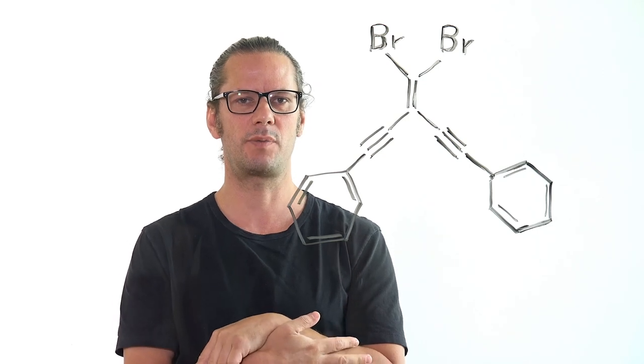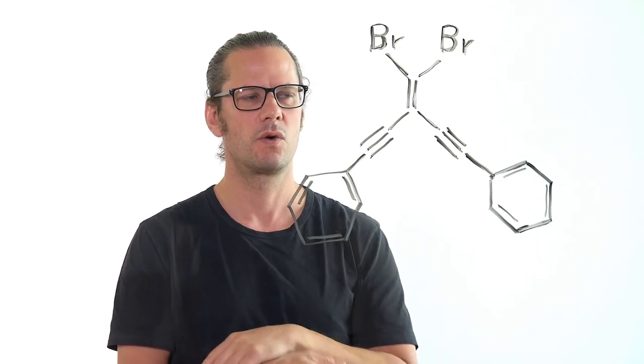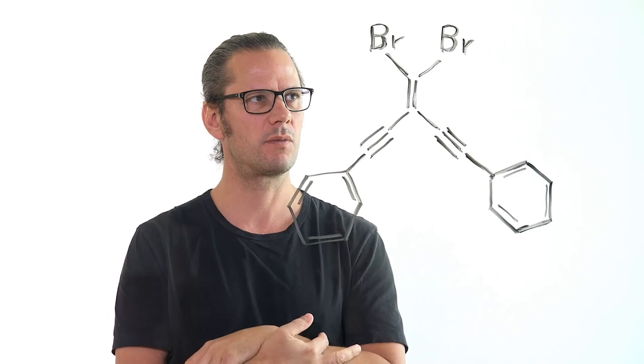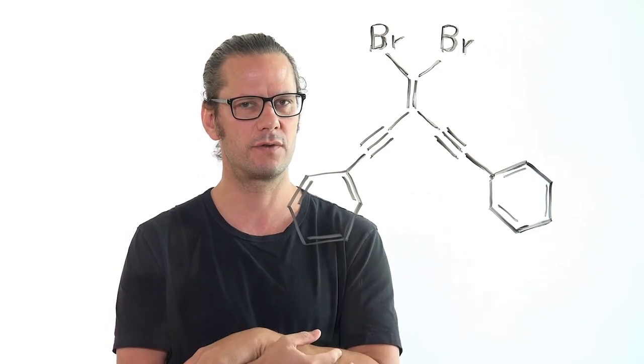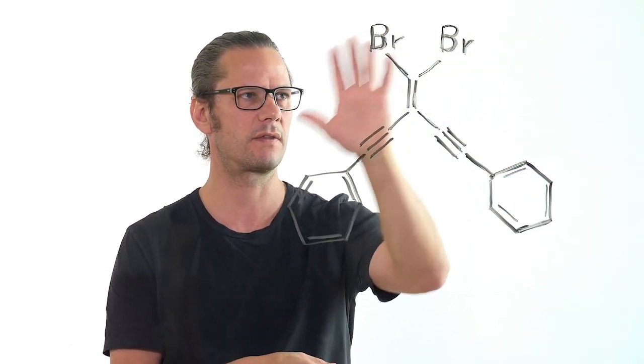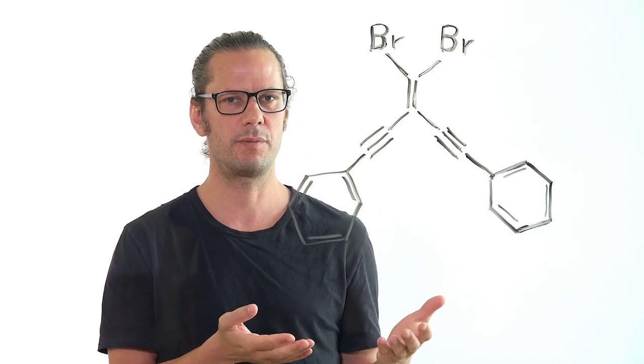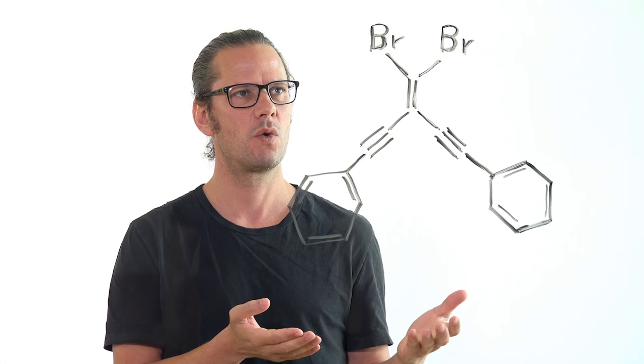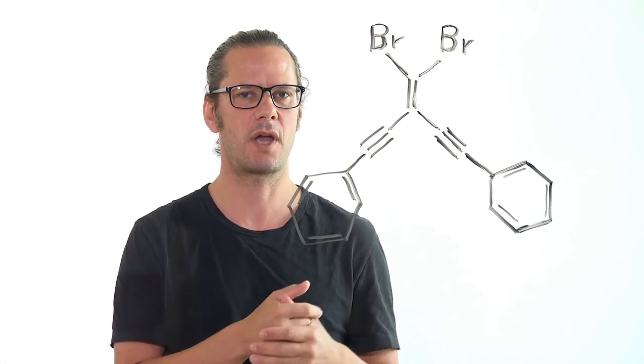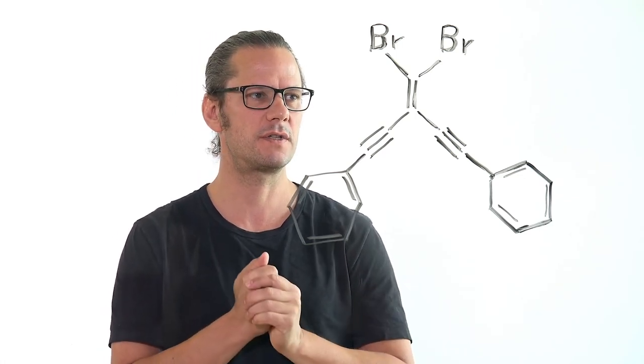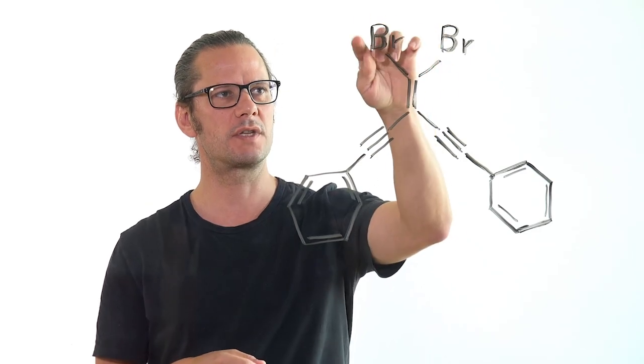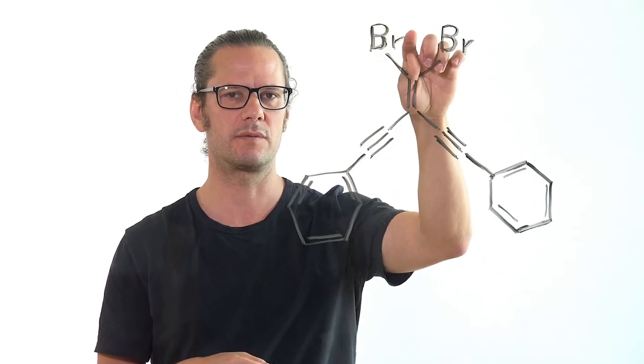So let me quickly explain what we did here. We obtained precursor molecules from our collaborators at University of Oxford which looks like this. We put them on the surface and then at low temperature and ultra-high vacuum we use our microscope to dissociate bonds. And the first bond we dissociate is we take off one of these bromine atoms.